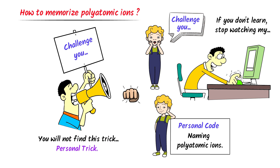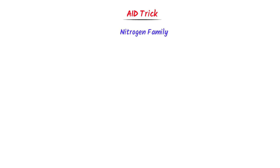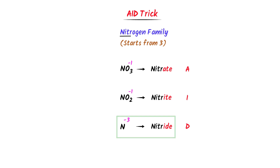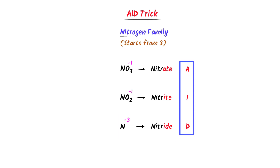The trick I use to memorize polyatomic ions is the AID trick. Consider polyatomic ions of the nitrogen family. Nitrogen polyatomic ions with oxygen start from 3 like NO3, then NO2, and nitrogen. The charge on the first two ions is negative 1 and the charge on the last nitrogen is negative 3. I take 'nitr' and write it in front of each ion, then use the AID trick. A stands for ATE, I stands for ITE, and D stands for IDE. So I get nitrate, nitrite, and nitride.